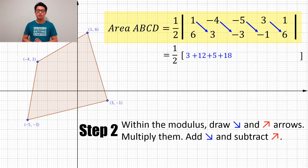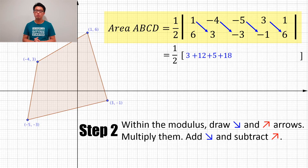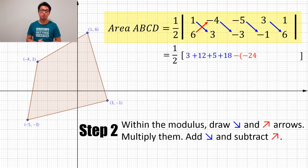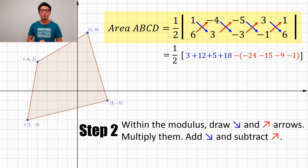Now that all the blue arrows are done, just like the shoelace, we crisscross. We draw upward arrows — from 6 to -4. With these red arrows, we subtract the red products from our sum. So we have 6 times -4, 3 times -5, -3 times 3, and -1 times 1. All of these red values we subtract.